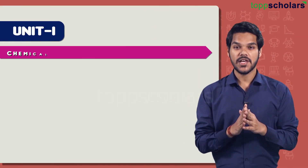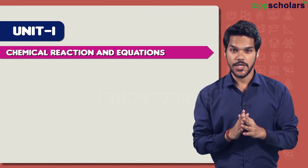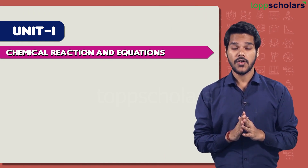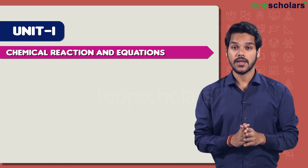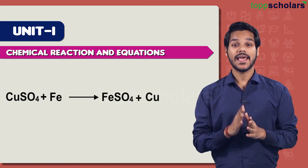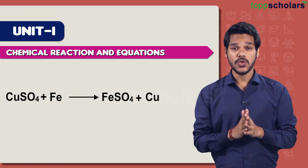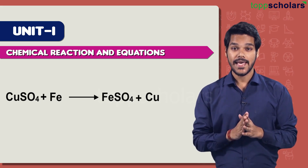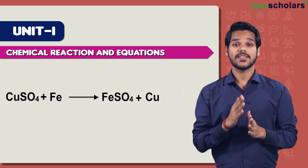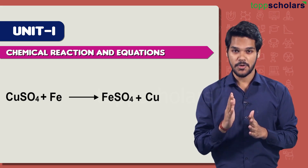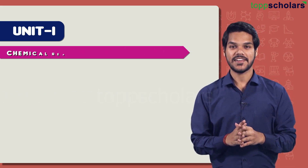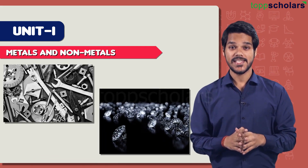Let's start with the first chapter: Chemical Reactions and Equations. This is one of the most important topics of Unit 1. From this chapter you can expect questions based on balancing chemical reactions. These equations can be combined with concepts from different topics, so it is very important that you learn how to balance a chemical reaction.